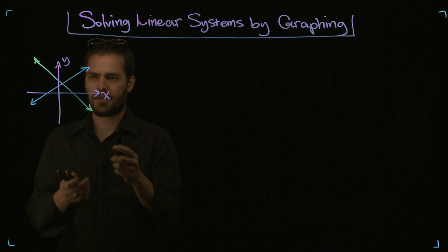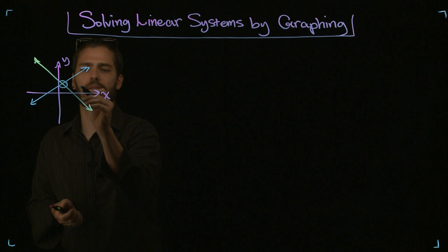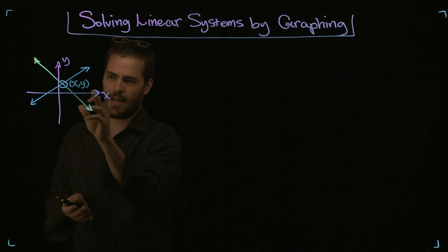So, conceptually then, we can say right here is the point where they have exactly the same solution, whatever point that is, the point where they cross. This has some x value and some y value, and if we were to plug those values into the equations that generated these lines, both equations would show that that is a solution.